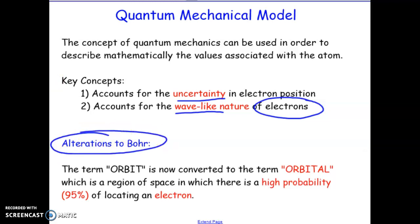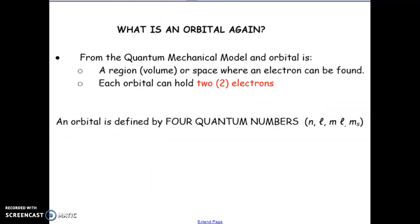There have been changes to Bohr's model. We no longer use the term 'orbit'; we now use the term 'orbital,' which is a region of space where there is a high probability of locating an electron. Basically, it's an area around the nucleus where we are most likely to find that electron moving around — a volume of space where an electron is most likely to be found.